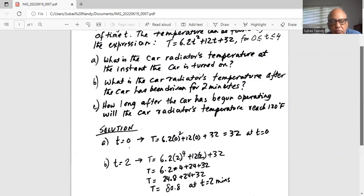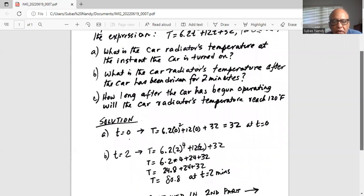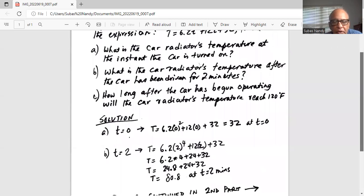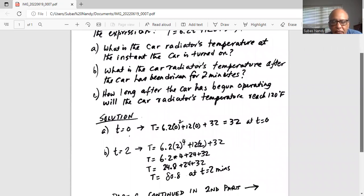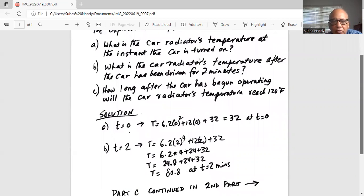So, 6.2 times 2² (which is 4) plus 24 plus 32. That's 24.8 + 24 + 32. The temperature is 80.8°F at t = 2 minutes.